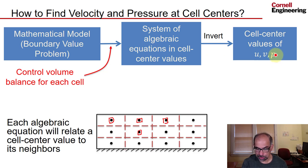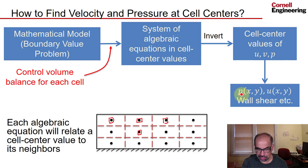And we can use a computer to invert those algebraic equations and get the cell center values of u, v, p. And once we know those 36 values, we can use interpolation and determine pressure, velocity everywhere. We can differentiate interpolation to find wall shear, and that would all involve post-processing.